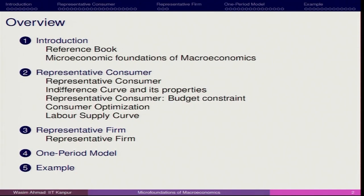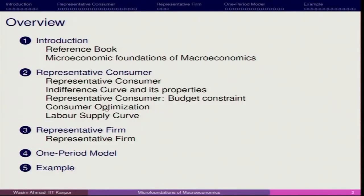We will characterize the representative consumer in terms of utility preference and budget constraint — there will be some kind of limit on the income of the representative agent. Second is consumer optimization: we will see what is the optimal level of consumption. In the one-period model, the consumer and leisure setup examines whether the representative consumer earns income through working or chooses leisure, given 24 hours in a day. For example, if the consumer works 8 hours and earns income from a firm, the remaining time represents leisure.